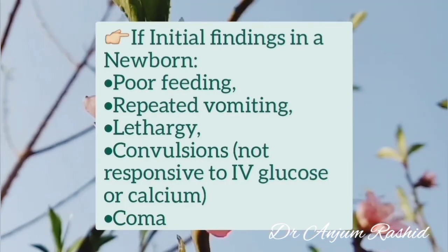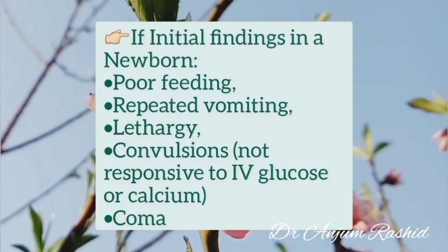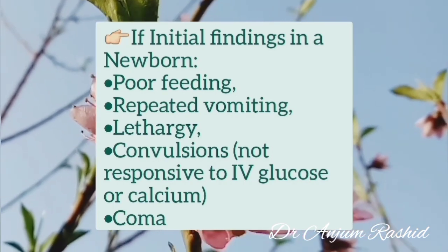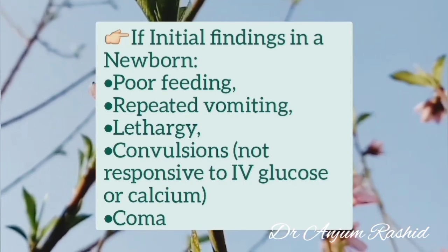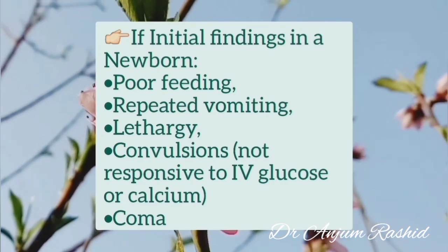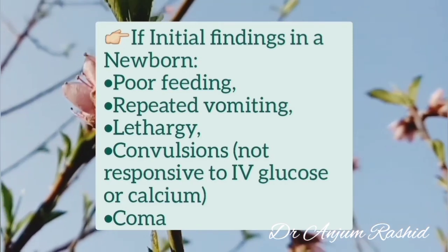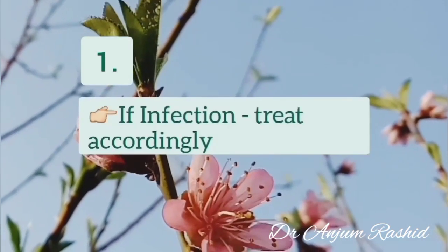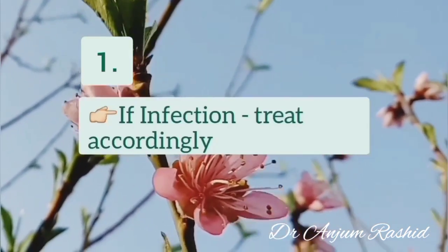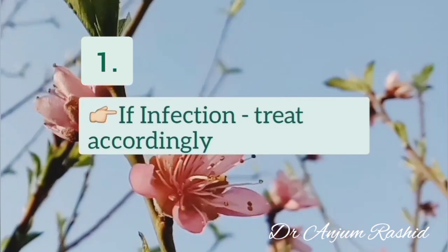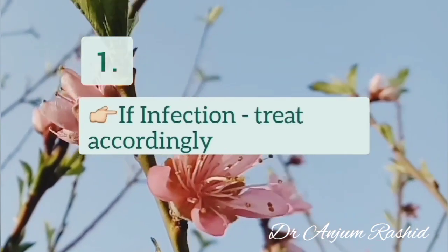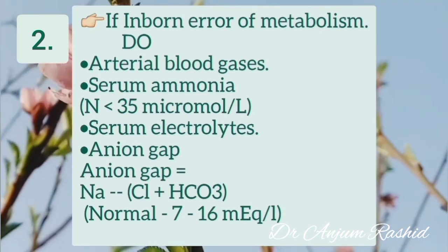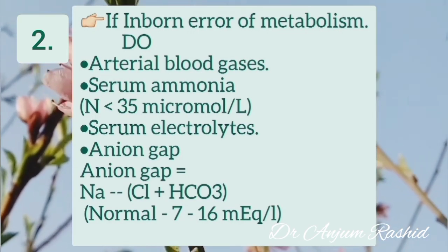If the initial findings in a newborn include poor feeding, repeated vomiting, lethargy, convulsions which are not responsive to intravenous glucose or calcium, and coma, then think of two diagnoses. Number one, it could be due to infection — do the relevant laboratory tests and treat accordingly. Number two, these initial symptoms could be due to an inborn error of metabolism.